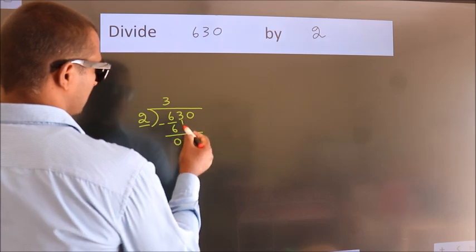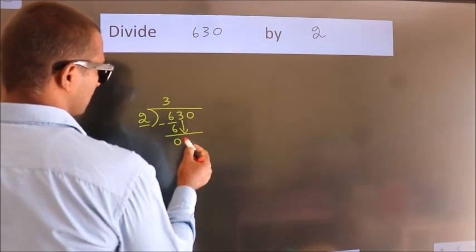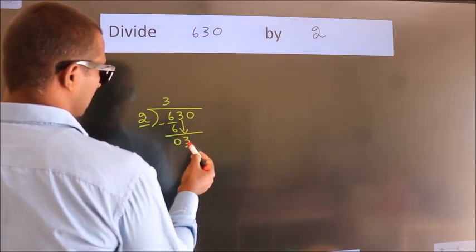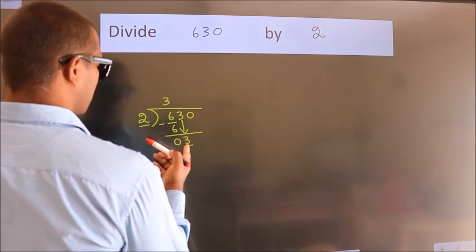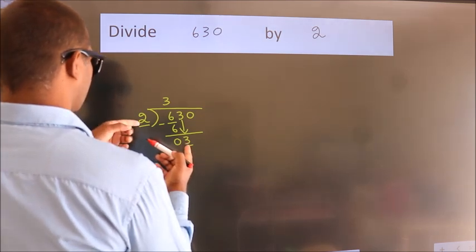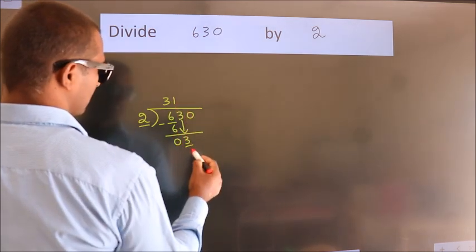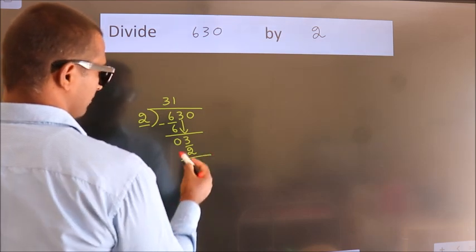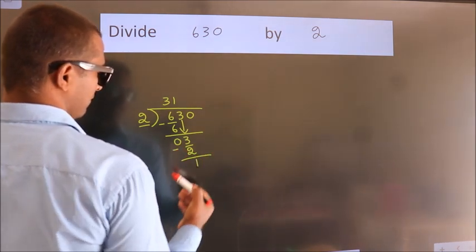After this, bring down the beside number. So 3 down. So 3. A number close to 3 in 2 table is 2 1s, 2. Now we subtract. We get 1.